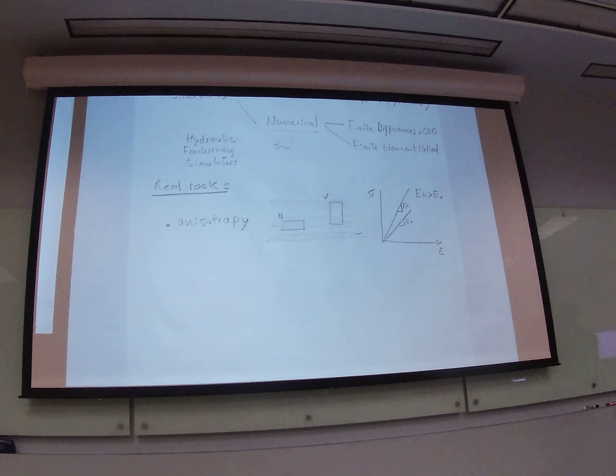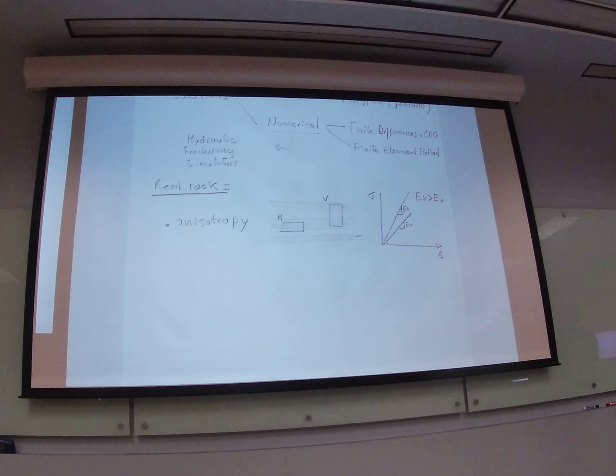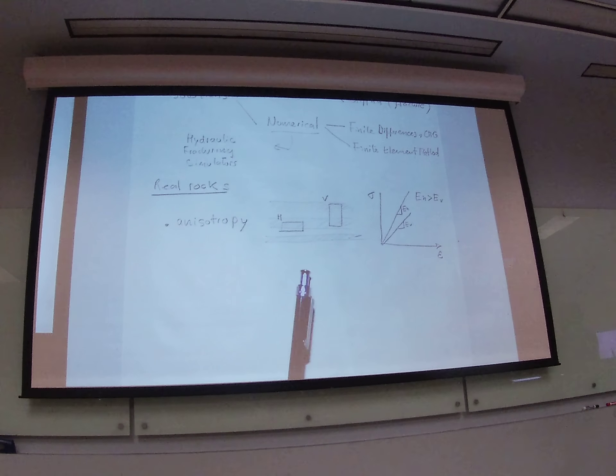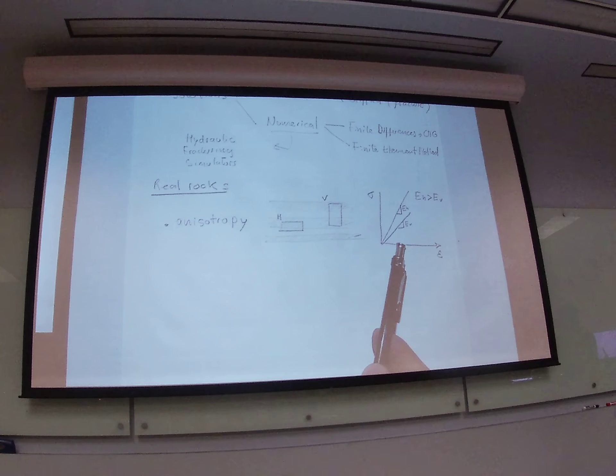Sometimes some rocks are more anisotropic than others and some others are closer to isotropy, but there is no such thing as an isotropic rock. And we will see later on that also this anisotropy is not only on elastic properties but also on failure properties, which also is very important to take into account.